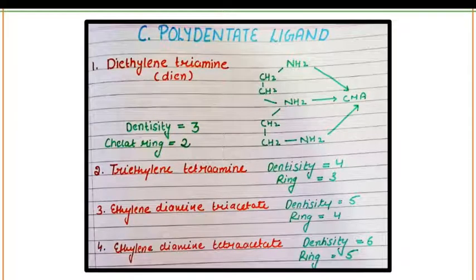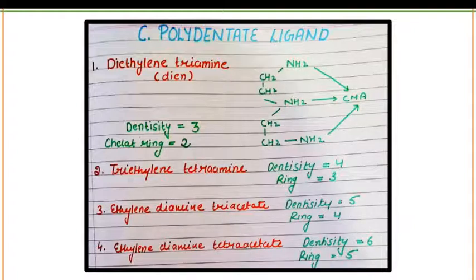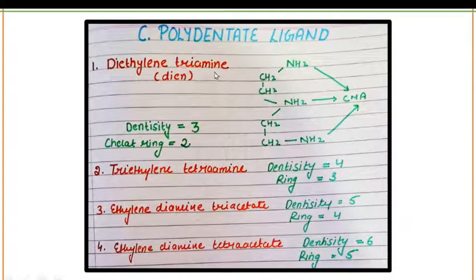Next are polydentate ligands — these have a denticity of more than two. If you know the denticity, you can calculate the rings present in a particular ligand. You can calculate chelating rings with the formula: denticity minus one. For example, the polydentate ligand diethylenetriamine has three donor atoms — the ligand is triamine — so the denticity is three.